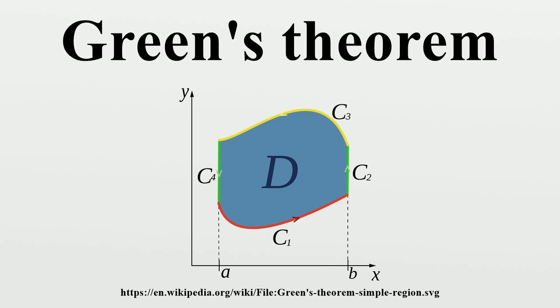Theorem: let C be a positively oriented, piecewise smooth simple closed curve in a plane, and let D be the region bounded by C. If L and M are functions defined on an open region containing D and have continuous partial derivatives there, then where the path of integration along C is counterclockwise.